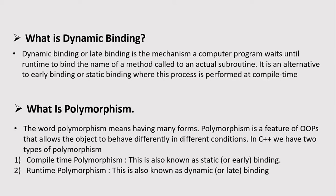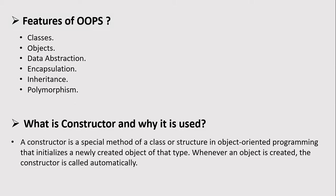What is polymorphism? The word polymorphism means having many forms. Polymorphism is a feature of OOP that allows the object to behave differently under different conditions. In C++ we have two types of polymorphism: compile-time polymorphism, which is static and early binding, and runtime polymorphism, which is dynamic and late binding.